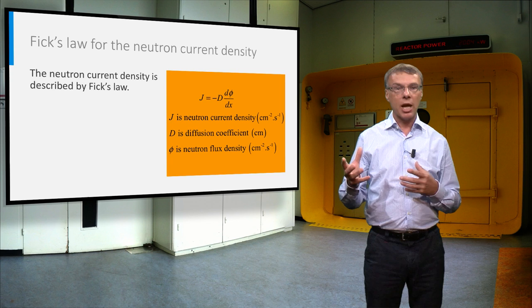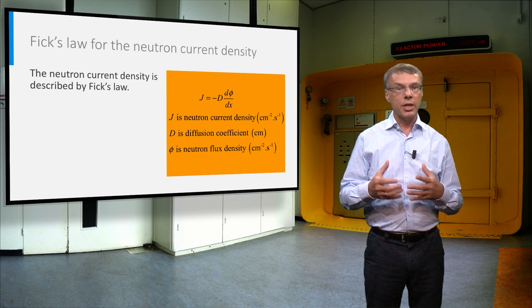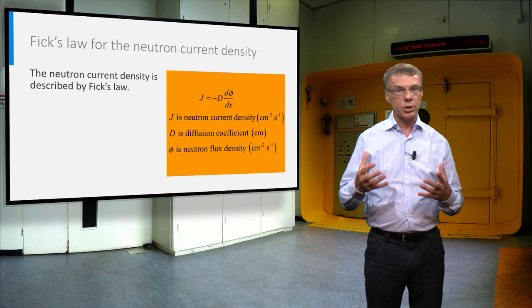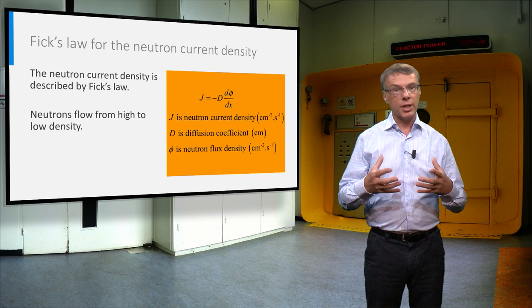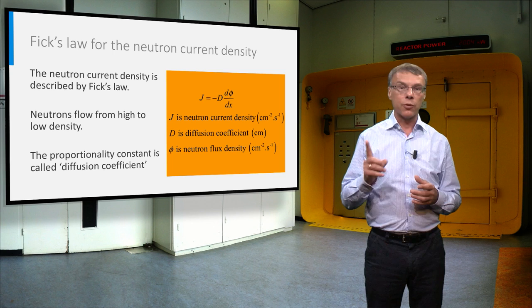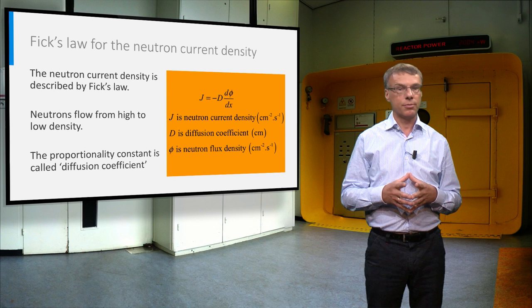Now we will derive an expression for the flow of neutrons from one region to the other. In diffusion theory, the transport of particles is described as being proportional to the gradient of the particle number density. In reactor physics, this would translate into a neutron current density that is proportional to the gradient of the neutron flux density. The formula for j gives the expression in one dimension, namely in the x-direction.